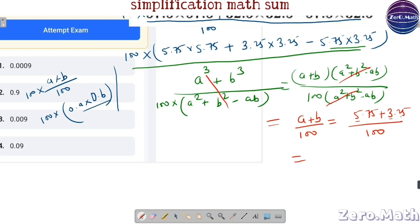Let's add the numerator, 5 plus 3 is 8, 0.75 plus 0.25 will be 1. So, 8 plus 1 is 9, divide it by 100. So, our answer would be 0.09.